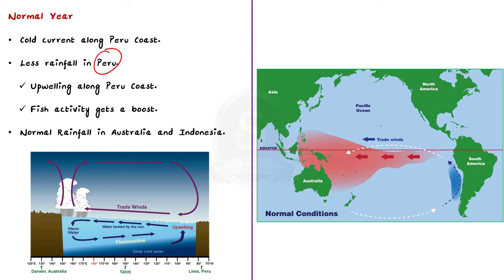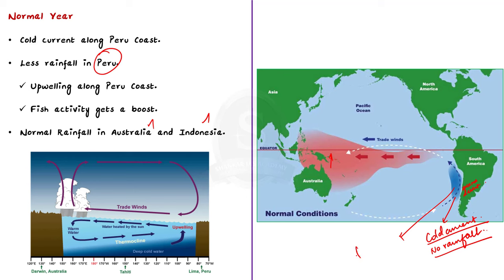Along the coast of Peru, we have a cold current, so the air will also be cold. Cold air does not rise up into the atmosphere and there will not be any rainfall along the coast of Peru. The world's driest place, the Atacama Desert in Chile, exists due to the presence of the Peruvian cold current. However, this lack of rainfall is actually a boon for Peru, because the upwelling brings a lot of nutrients to the surface. Phytoplankton feeds on these nutrients and the fish in turn feed on the phytoplankton, making Peru a rich breeding ground for fish.